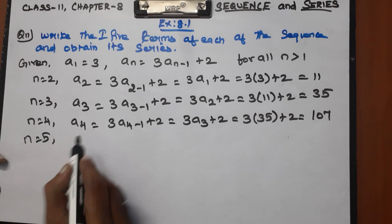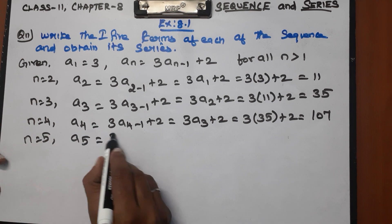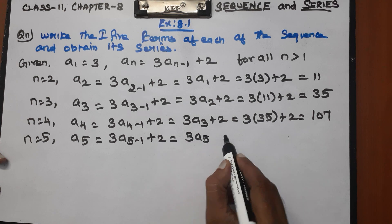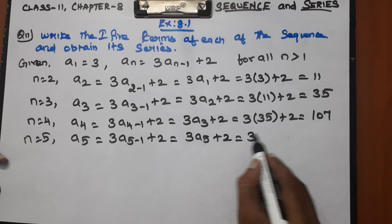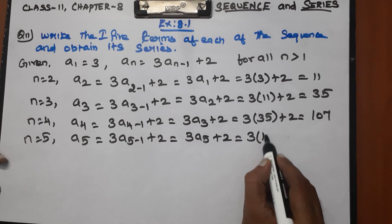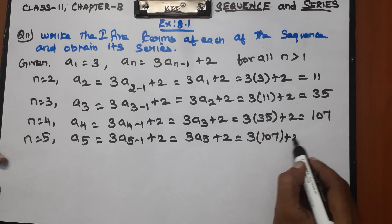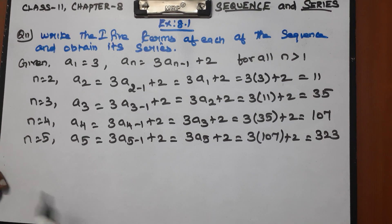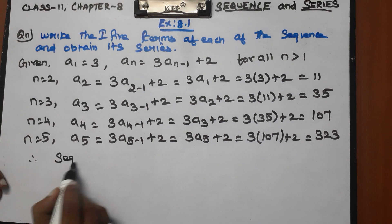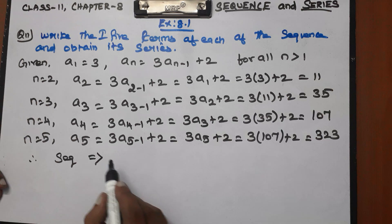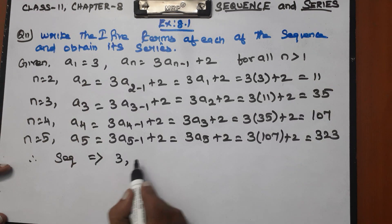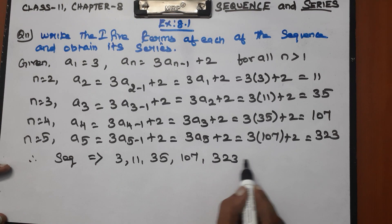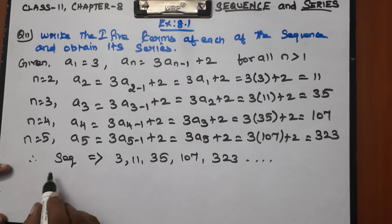For n equal to 5: a5 equals 3 into a4 plus 2, equals 3 into 107 plus 2, equals 321 plus 2, equals 323. Therefore the sequence is 3, 11, 35, 107, 323.